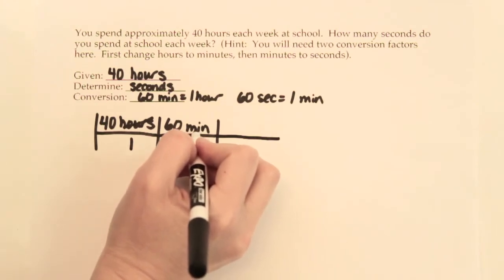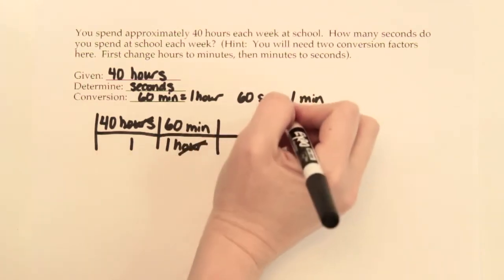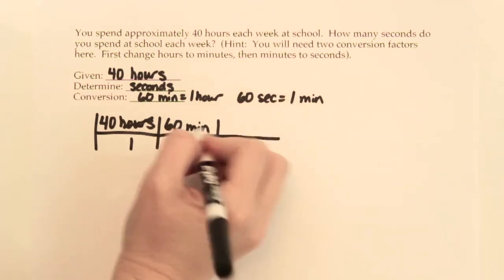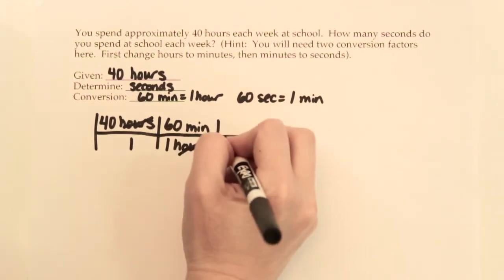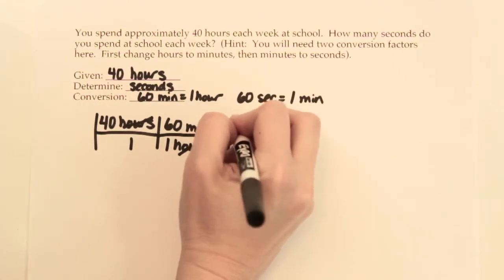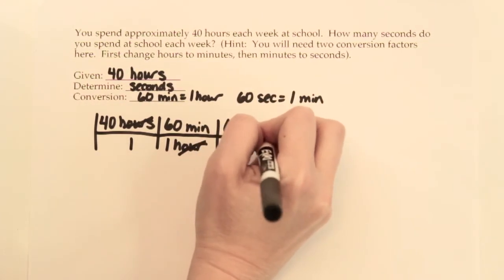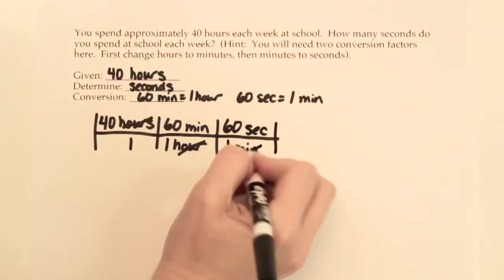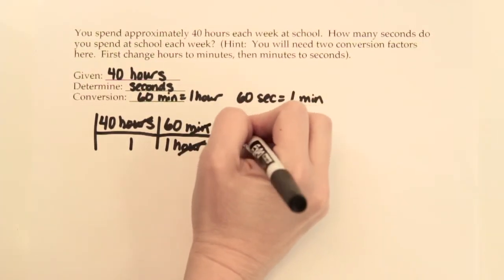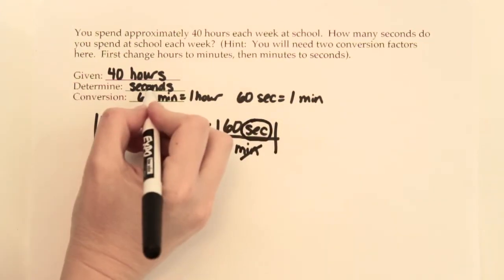This time we want the minutes to cancel out and go away. So with my conversion factor between 60 seconds and one minute, I'm going to put the one minute part of that conversion factor on the bottom. The 60 seconds part is going to go on the top. That will allow us to cancel out minutes and minutes, which leaves us with just seconds, which is what we were trying to figure out so we know we've hit the end of the problem.